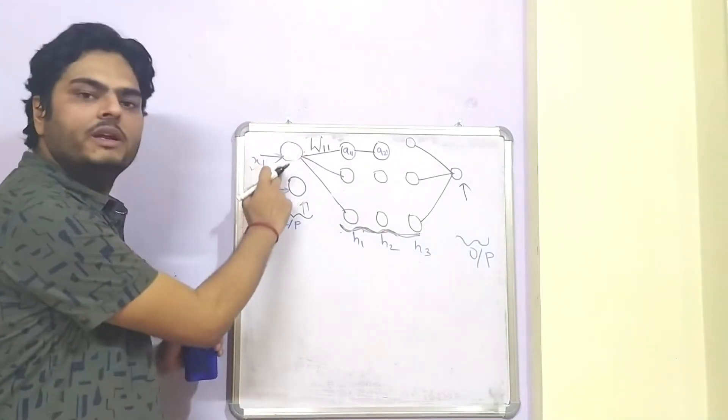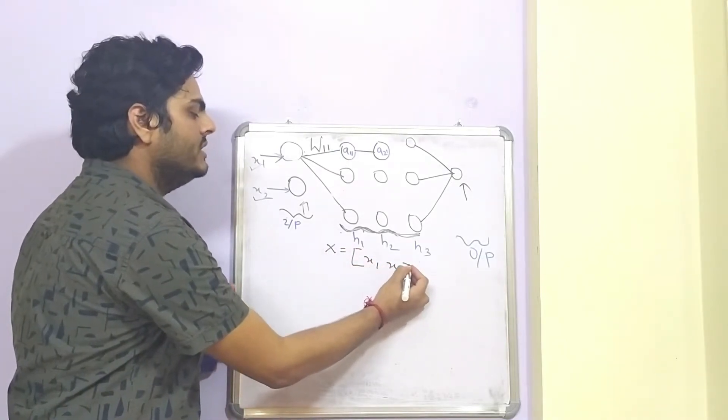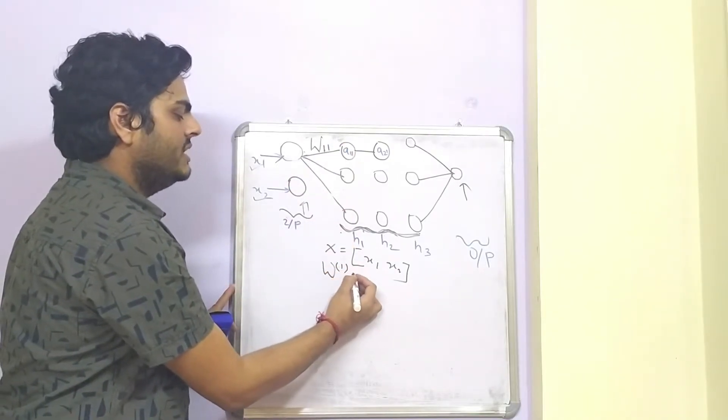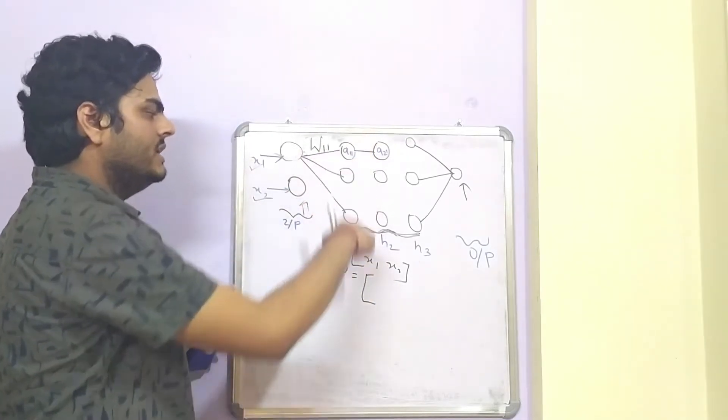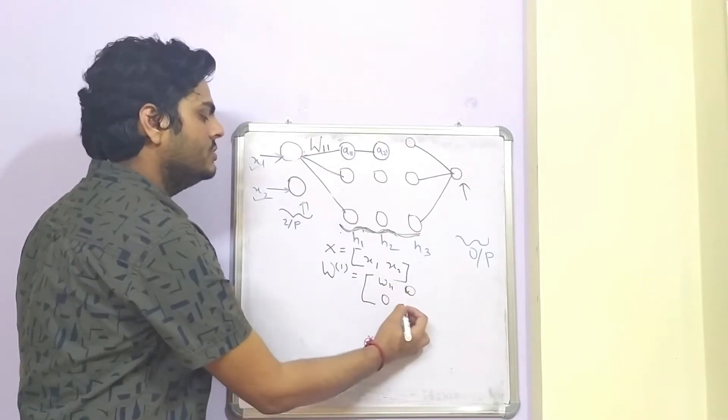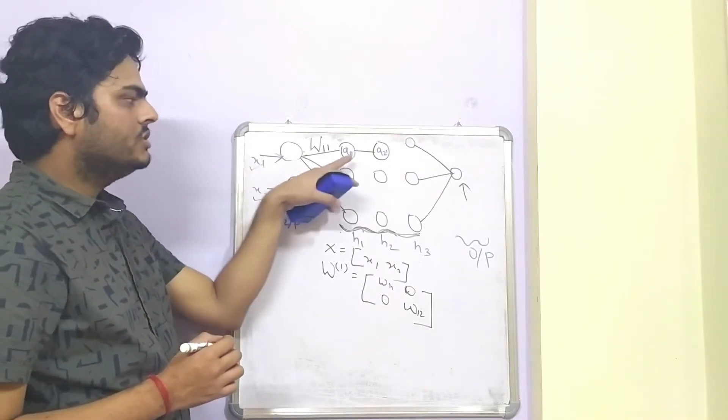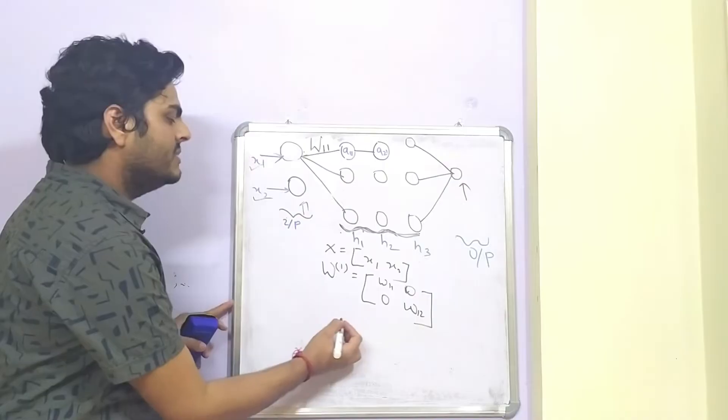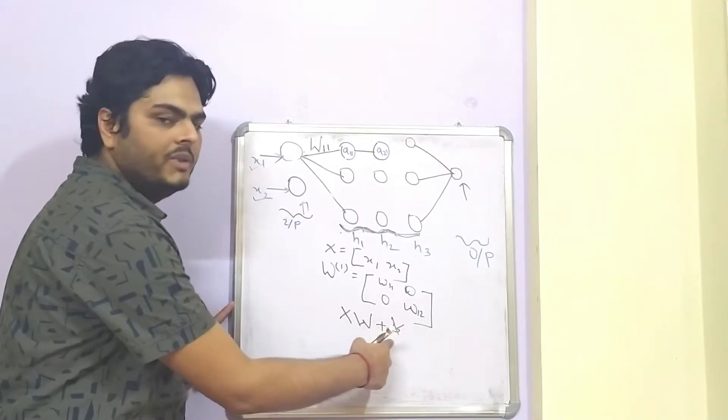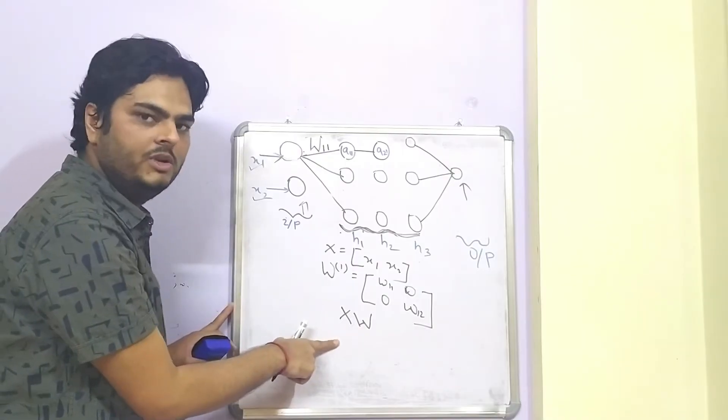So, what are the inputs here, x1 and x2. Let us create a matrix, call as input matrix x1 and x2. What is the weight here? Let us call this as weight at first level. So, I am calling it weight at level 1 means at this layer. So, what is the weight w11, 0, 0 and w12. Now, what goes as input to this node here, it will be nothing but a multiplication of x and w.